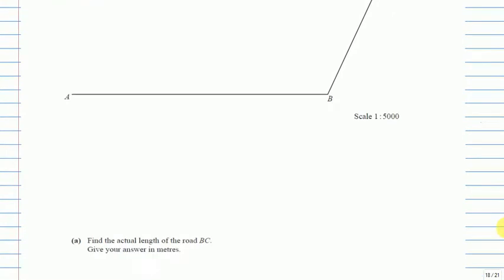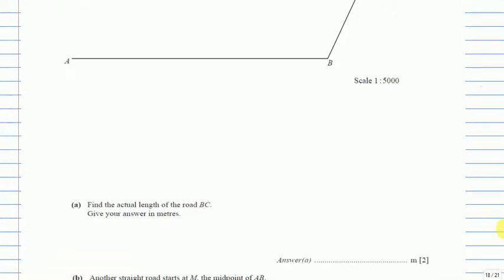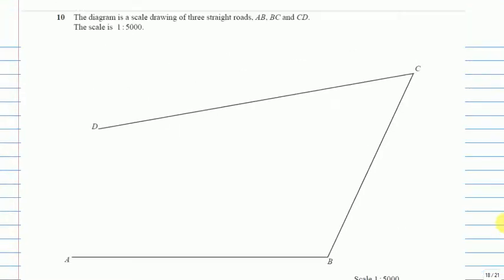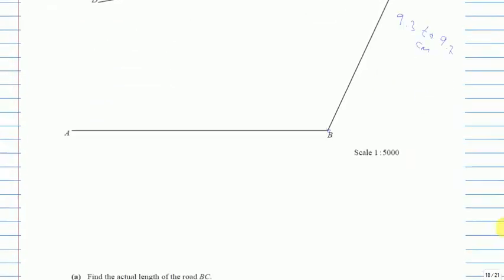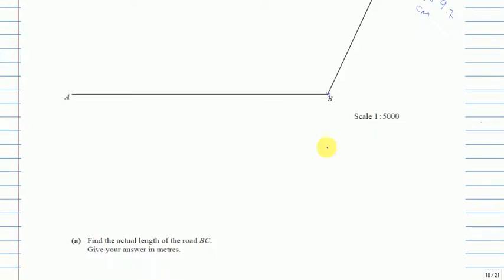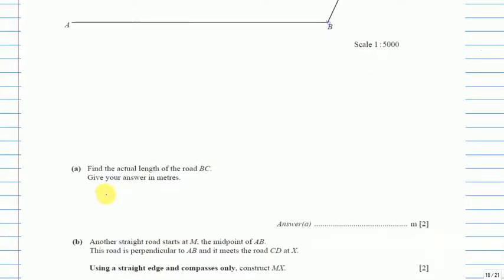Part A: find the actual length of road BC and give your answer in meters. We have to calculate the length from B to C. Using your scale, measure it — your answer should be between 9.3 and 9.7 centimeters. We don't want the paper answer; we want the actual real-world length. For example, let's assume we got 9.5 centimeters.